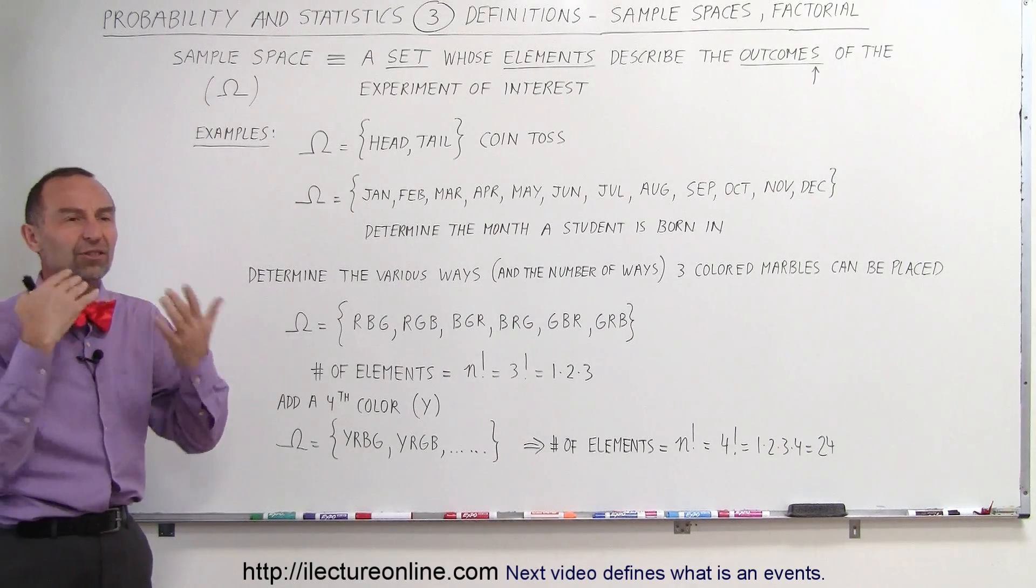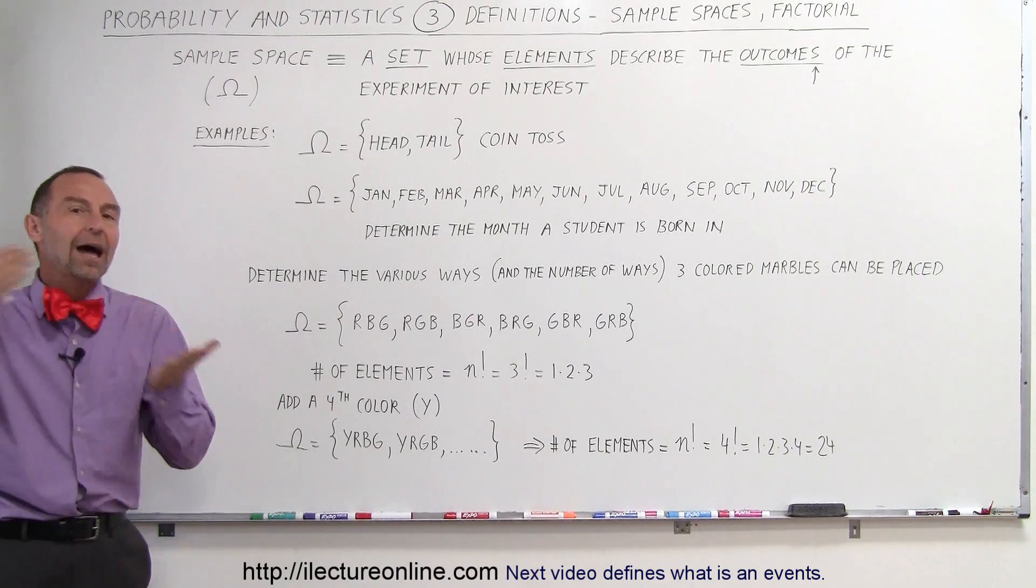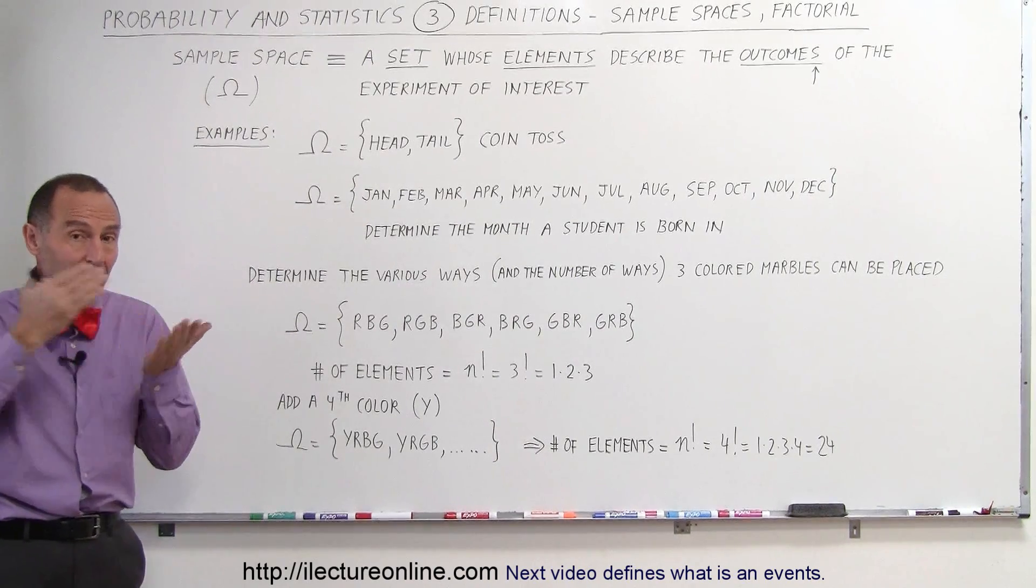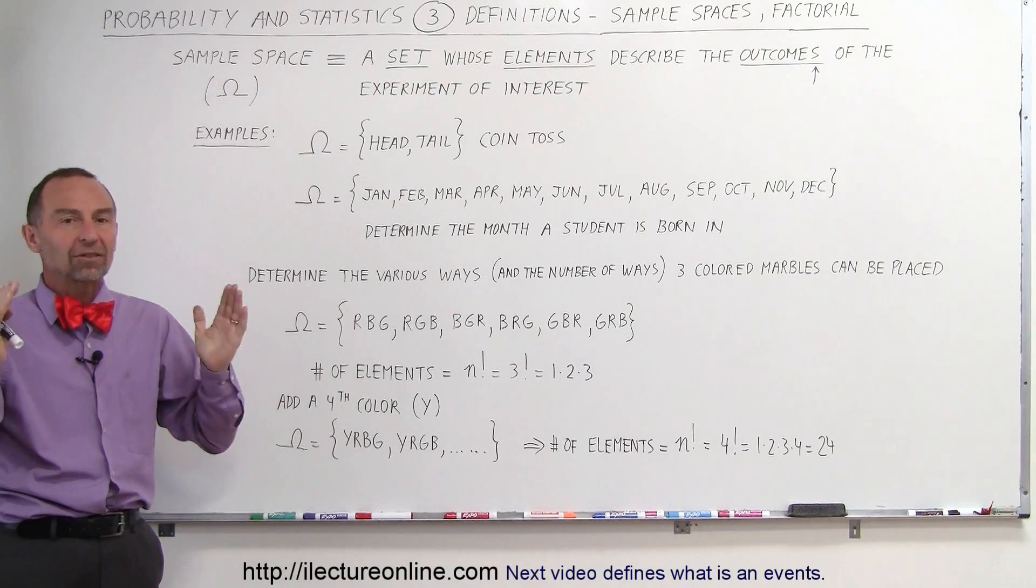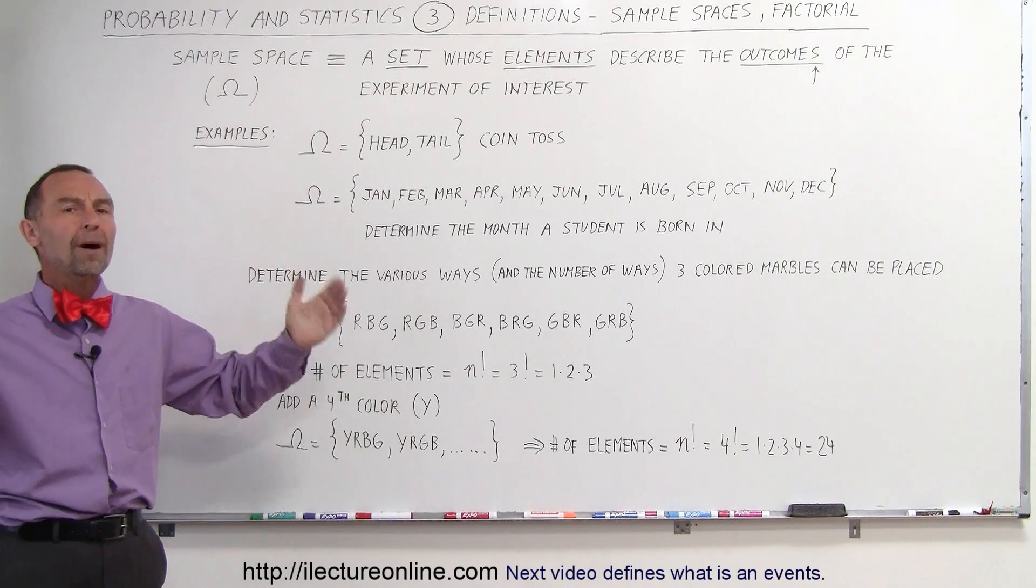So we're going to do a test, an experiment, and there are certain kinds of outcomes we can have. Those certain types of outcomes are going to be the elements of the set, and that set is then called the sample space. The sample space encompasses all the possible outcomes.